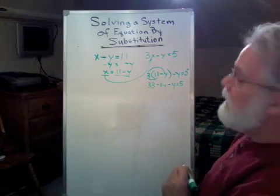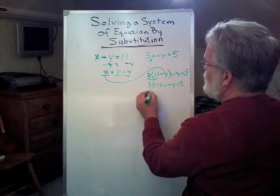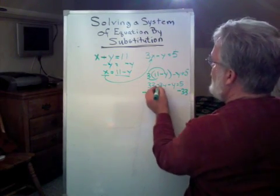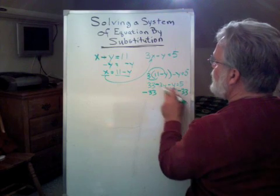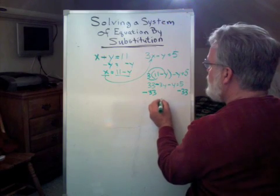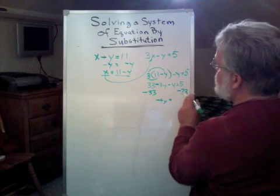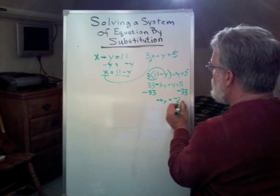I want to isolate my y now, so I'm going to subtract 33 from both sides. Negative 3y minus y is negative 4y. And that's going to equal, if I run that through my calculator, negative 28.